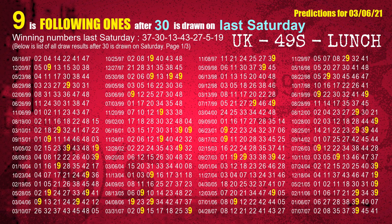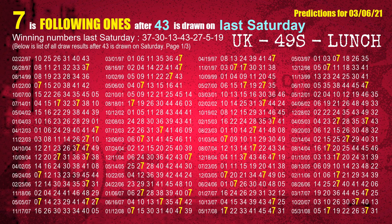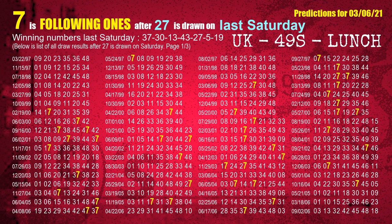The second winning number last Saturday is 30. The most frequently following units digit is 9 when 30 is the winning number on last Saturday. The third winning number last Saturday is 13. The most frequently following units digit is 7 when 13 is the winning number on last Saturday. The fourth winning number last Saturday is 43. The most frequently following units digit is 7 when 43 is the winning number on last Saturday. The fifth winning number last Saturday is 27. The most frequently following units digit is 7 when 27 is the winning number on last Saturday.